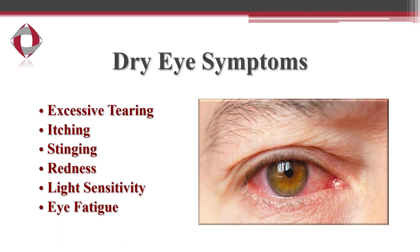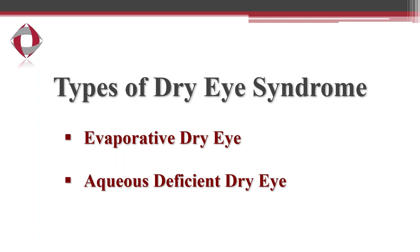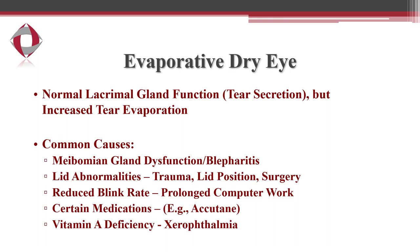Common symptoms of dry eye include excessive tearing, itching, stinging, redness, light sensitivity, and eye fatigue. When we talk about dry eye, we typically divide it into two different categories: evaporative dry eye and aqueous deficient dry eye. These are two separate kinds of dry eye, but a lot of times they coincide and occur simultaneously with one another.